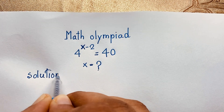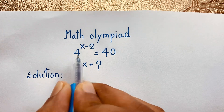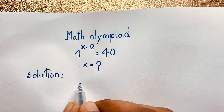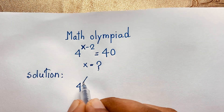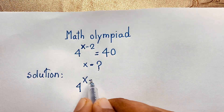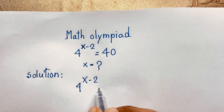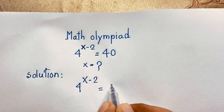Our question is 4 to the power x minus 2 is equal to 40. This is our question.